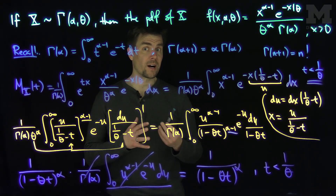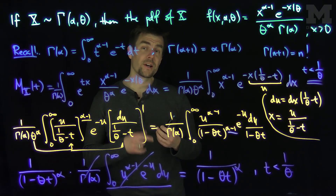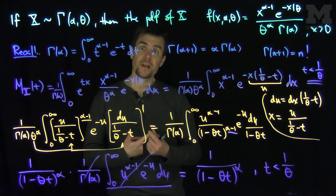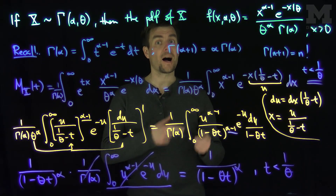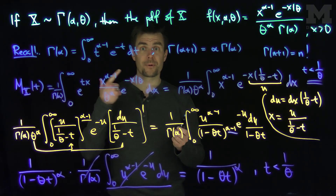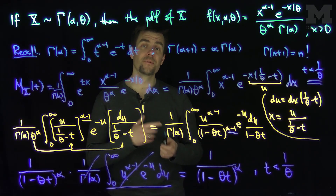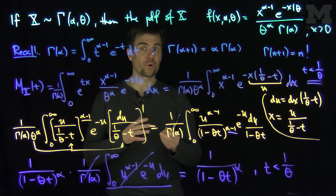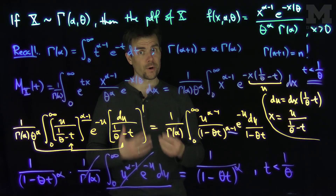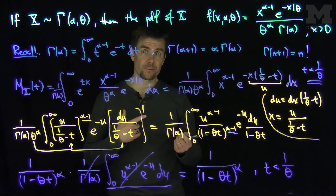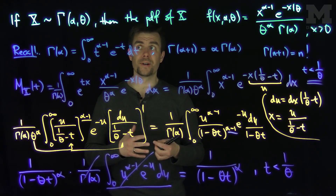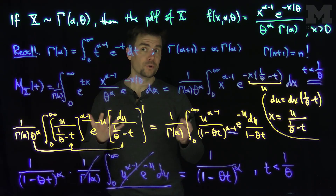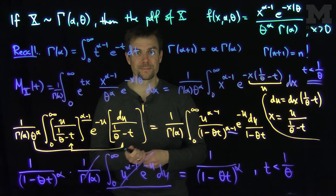This result is very useful in a variety of contexts. The first is that if you sum n independent exponential distributions with parameter theta, you get a gamma distribution with parameters n and theta. It also comes into play when studying chi-square distributions, because chi-square distributions follow a gamma distribution with a suitable choice of alpha and theta equal to 2, for example. Thank you very much.